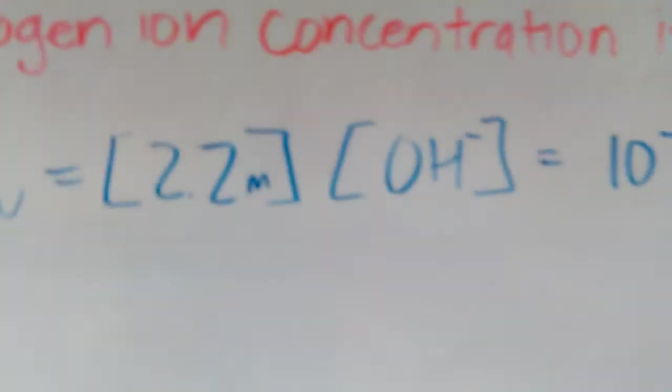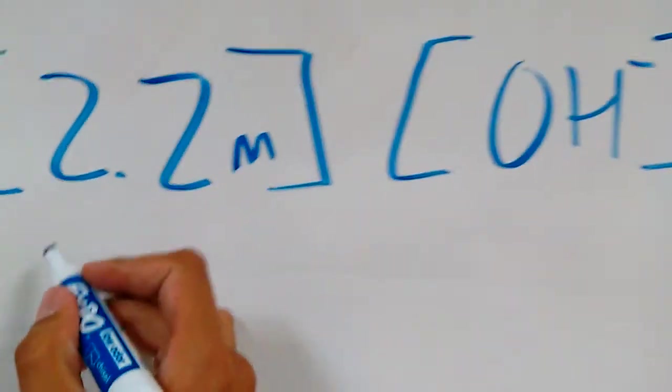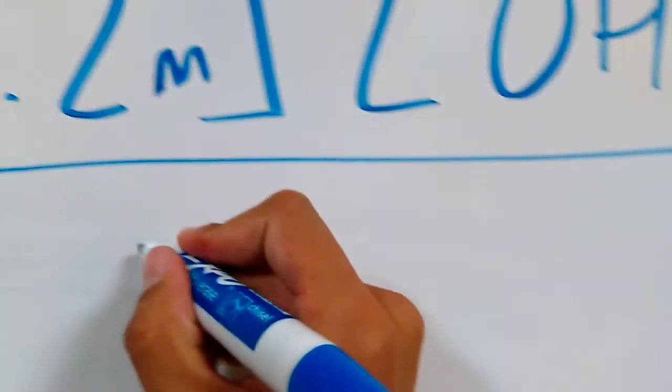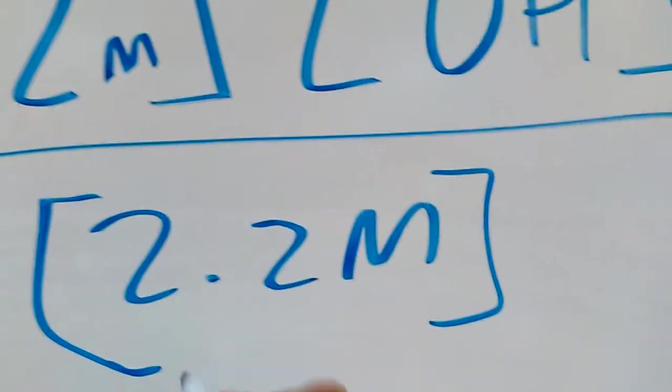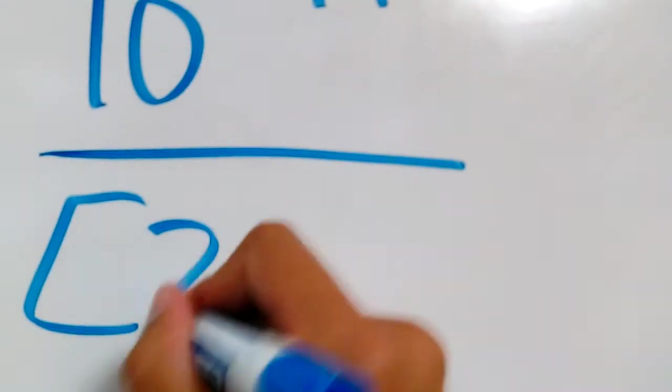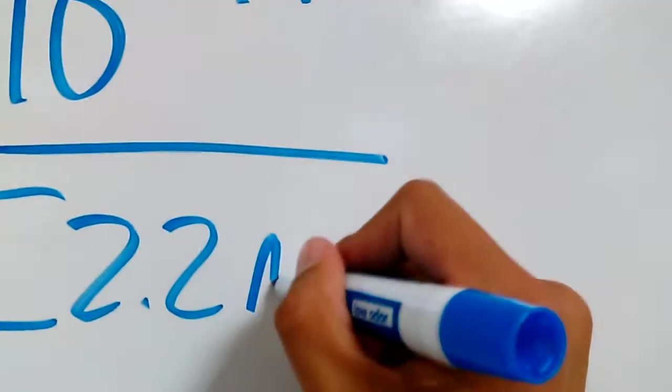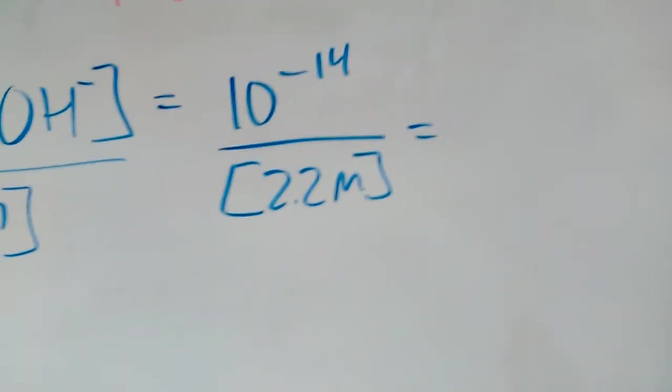So all you do here is simple math. All you're going to do is just divide your molarity by 2.2, your hydrogen ion. You divide it here, and it's going to leave you with that equation.